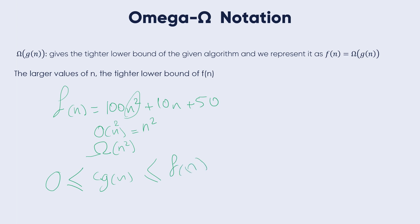Our objective is to find the largest rate of growth of g(n) which is less than or equal to the given algorithm's rate of growth. For example, to give a lower bound for f(n) = 5n², the upper bound here is n².